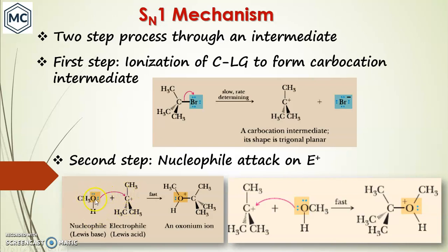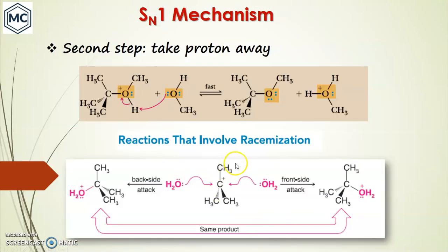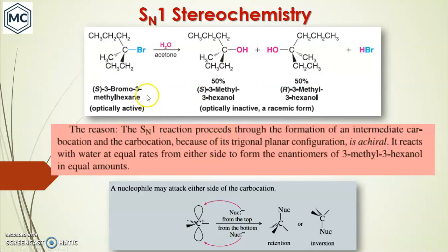In the second step, nucleophilic attack occurs on the electrophilic carbocation. Two types of attack are equally probable: attack from the back side gives a product with inverted configuration (an oxonium ion), while attack from the front side gives a product with retained configuration. The oxonium ion is then deprotonated to give the final product. Because both attacks are equally probable, you get a mixture of inverted and retained configuration products.